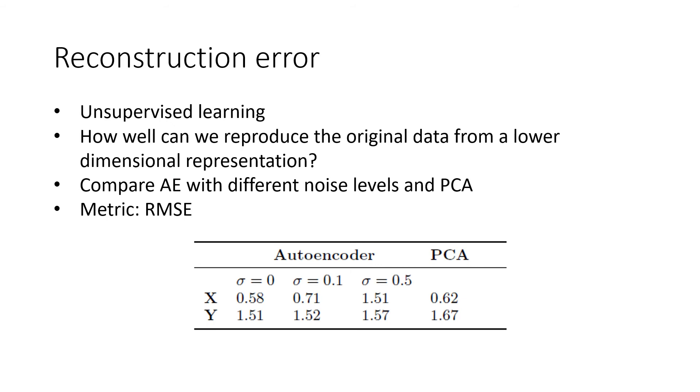First, we investigate the reconstruction error of denoising autoencoders and PCA. We are answering the question, how well can we reproduce the original data from a lower dimensional representation? As a metric, we use root mean squared error of the reconstruction. The table below features three autoencoders with varying levels of added Gaussian noise, as well as PCA. In the case of atmospheric parameters, the best performer is an autoencoder with no added noise. In the case of spectral data, all three autoencoders perform similarly, and they all outperform PCA.